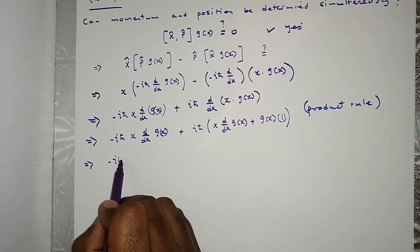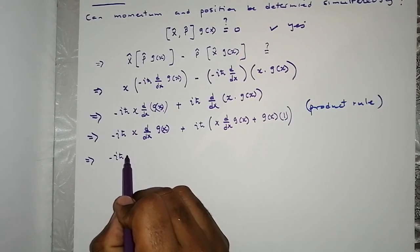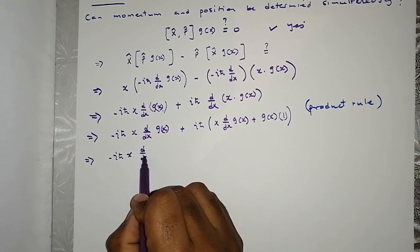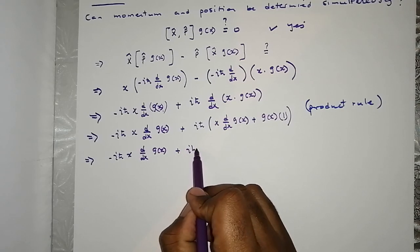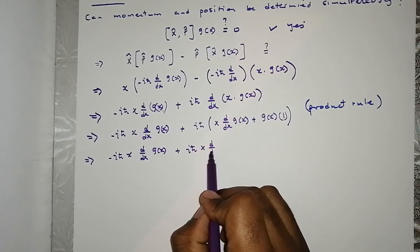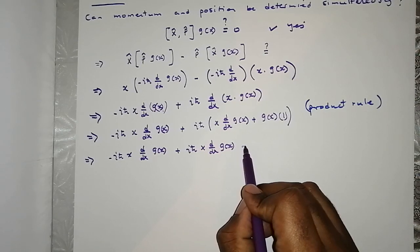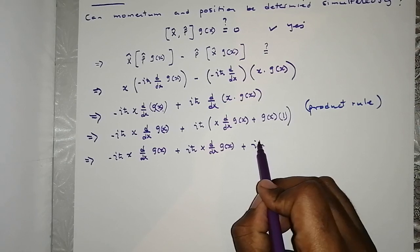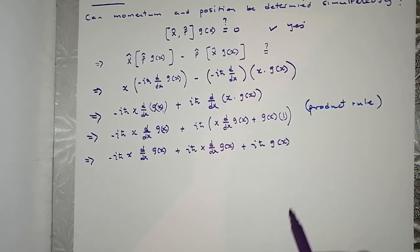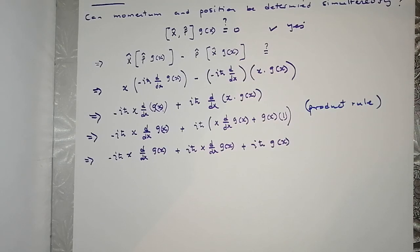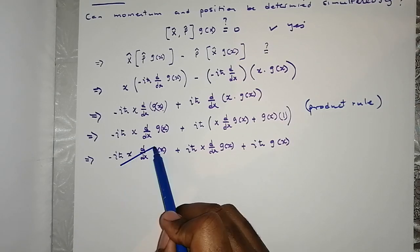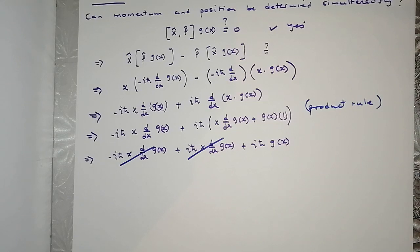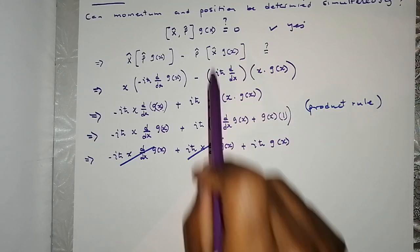Continuing, we have minus iħ times x times d/dx applied to g(x), plus iħ times x times d/dx of g(x), plus iħ times g(x). Notice that this term and this term are the same, so their sum equals zero — they cancel out.